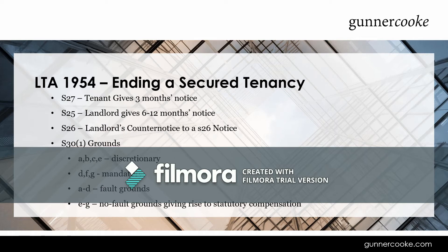Looking at ending a secured tenancy: the tenant can just leave at the end of the term — they don't have to carry on. If they go past the end of the term, they have to give three months' notice under Section 27. If the landlord wants to give notice it becomes more difficult. The landlord's standard notice for ending the tenancy is Section 25, requiring between 6 and 12 months' notice. Alternatively, if the tenant has requested a new tenancy under Section 26, the landlord can serve a counter-notice saying that they need them to leave. The landlord can only rely on grounds A to G of Section 31 of the Landlord and Tenant Act 1954.